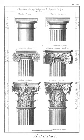Cincture: ring, list, or fillet at the top and bottom of a column, which divides the shaft from the capital and base.